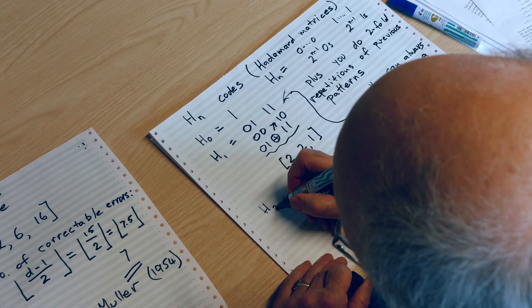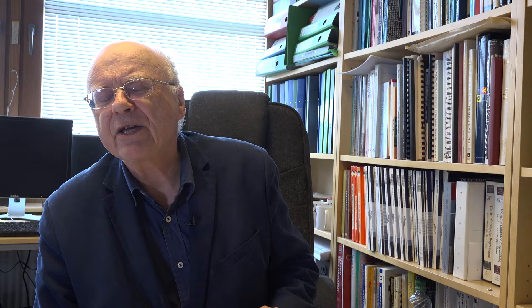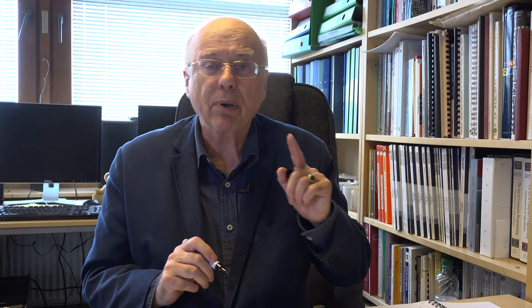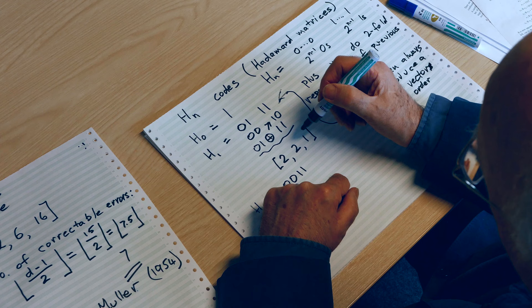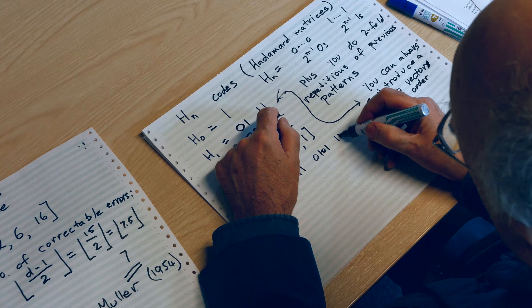H2. You need 2 to the N minus 1 zeros and 2 to the N minus 1 ones — that's the new thing introduced every time. N is now 2, so 2 to the power 1 is 2: you need two 0s and two 1s, plus twofold repetitions of what you had last time: 0, 1, 0, 1 and 1, 1, 1, 1.